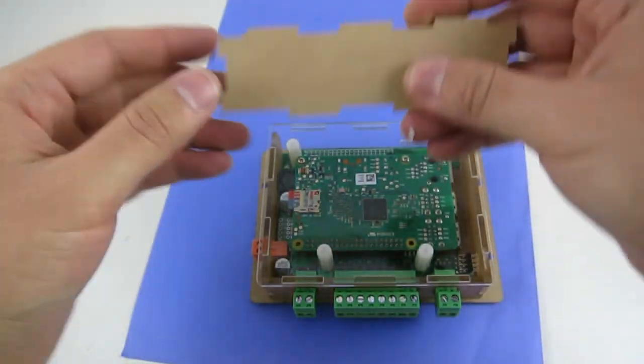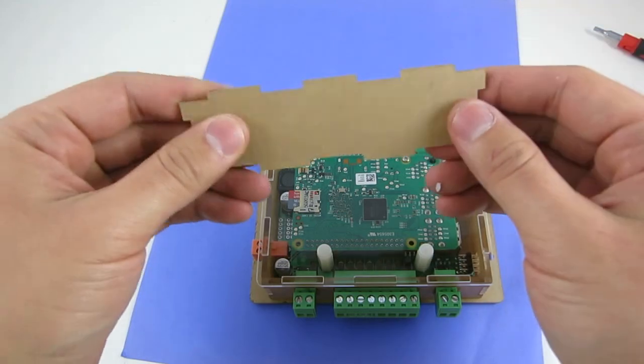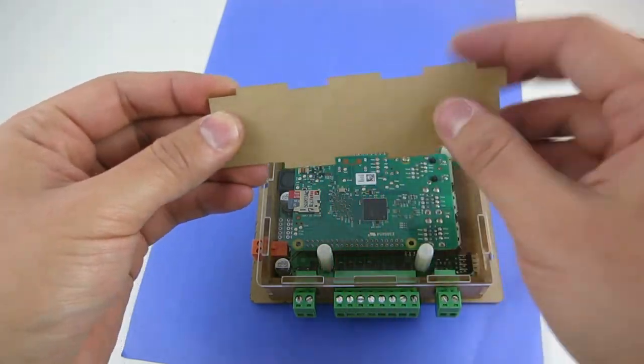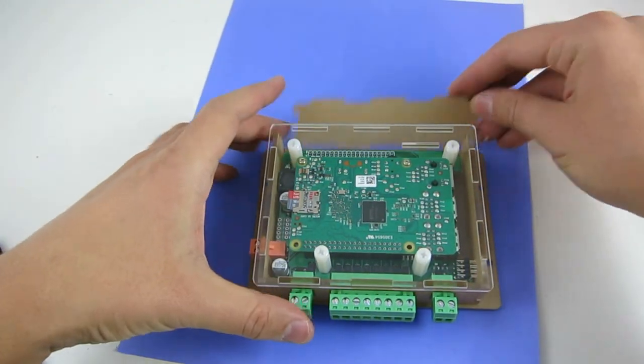Of course, if you want, you can also use a Dremel or the CNC tool to make a cutout on this piece and then put it back.